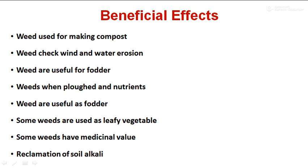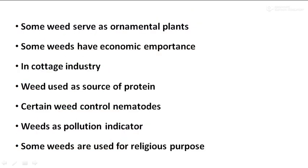Some weeds are useful for the reclamation of alkali soils — for example, Argemone mexicana is very useful for reclamation of alkali lands. Some weeds serve as ornamental plants; a number of weeds have beautiful and attractive flowers used for beautification. Lantana camara (Ghaneri) is used as an ornamental plant or hedge in gardens. Some weeds are used as pot herbs, like cactus, and Hariyali for lawn preparation.